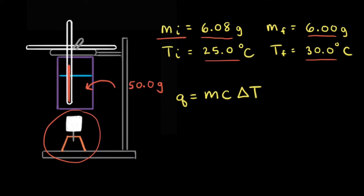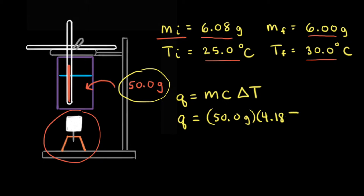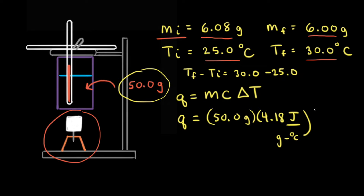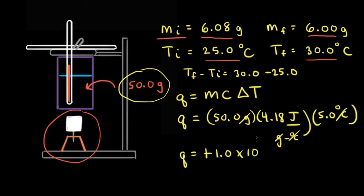Let's calculate the heat gained by the water using the equation Q = mcΔT, where Q is the heat transferred, m is the mass of the water (50.0 grams), c is the specific heat of water (4.18 joules per gram degree Celsius), and ΔT is the change in temperature — the final temperature minus the initial temperature — which is 30.0 minus 25.0, equal to 5.0 degrees Celsius. Grams cancels out, degrees Celsius cancels out, and we find that Q is equal to positive 1.0 × 10³ joules.